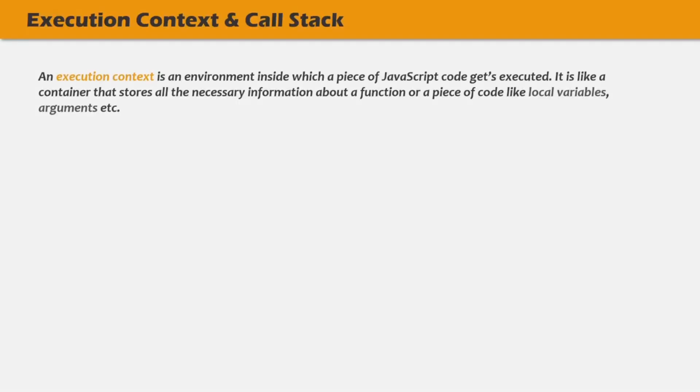An execution context is an abstract concept, but we can say that an execution context is an environment inside which a piece of JavaScript code gets executed. It's like a container that stores all the necessary information about a function or a piece of code, like the local variables, the arguments, etc.